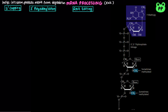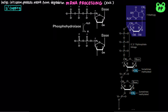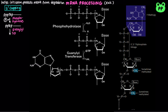5' capping involves three steps. First, phosphohydrolase cleaves the gamma phosphate group from the 5' end of the transcript, releasing inorganic phosphate. Next, guanylyltransferase transfers guanosine monophosphate from GTP to the 5' end of the mRNA transcript, forming a 5' to 5' triphosphate linkage, and releasing inorganic pyrophosphate.